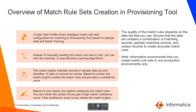Using this feature, we can create data-driven profile intelligent match rule set configuration for matching in provisioning tool, based on sample data in match training. Instead of manually creating the match rule set, you can train the machine — it uses machine learning algorithms. The match engine then matches records in a sample data set and identifies 10 pairs of records for review. Based on review, the match engine creates the match rule set and provides a confidence score. Based on your input, the system configures the match rules.